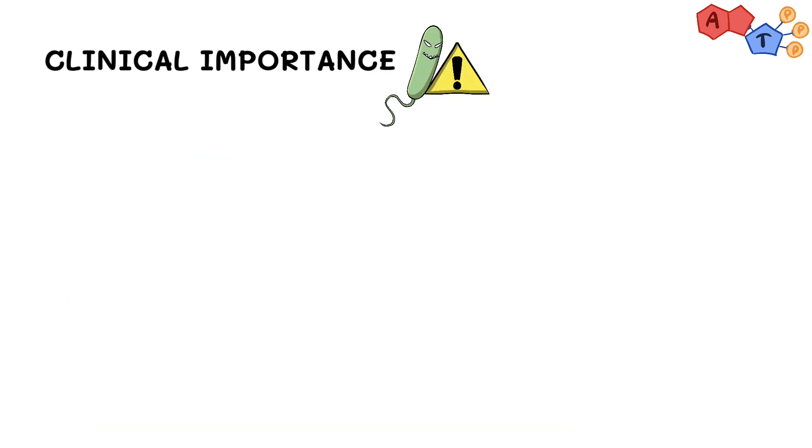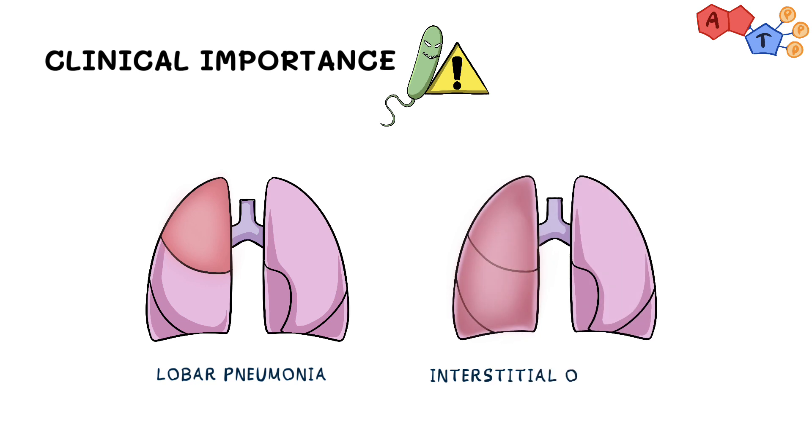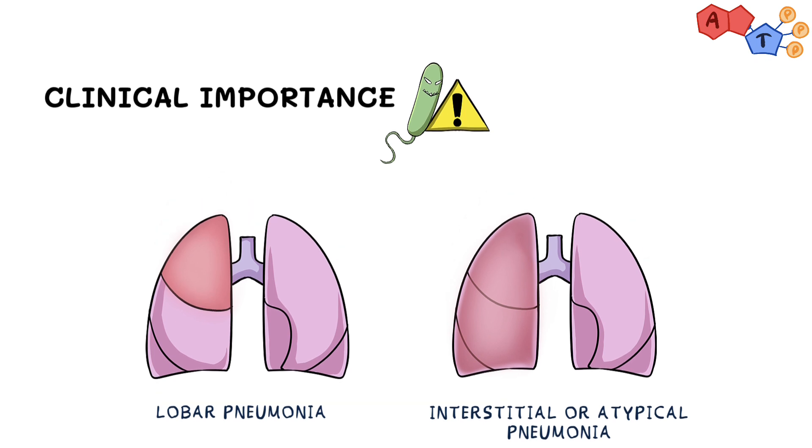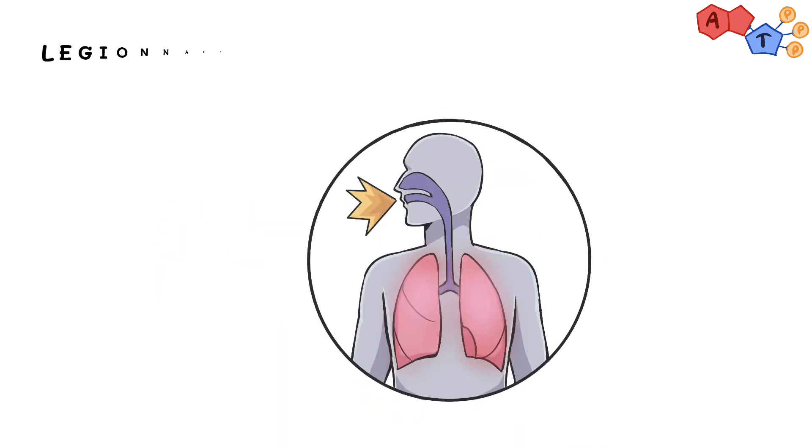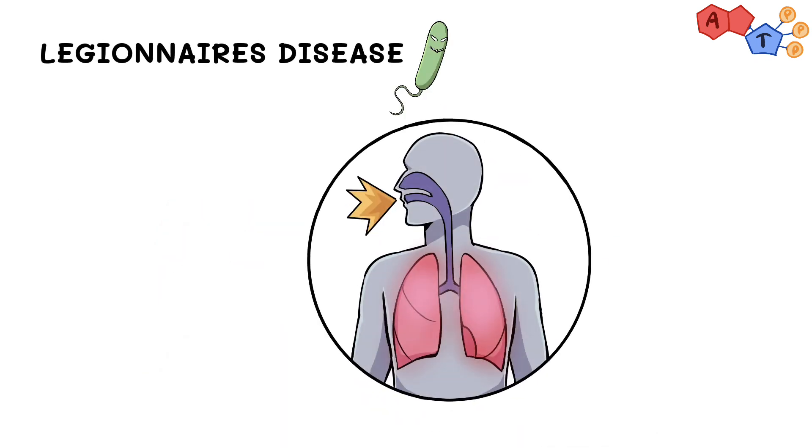Legionella can cause lobar as well as interstitial, also known as atypical pneumonia. In addition to that, it can cause two types of diseases. The first one is called Legionnaires disease. In this disease, patient will present to you with mild symptoms and the pneumonia can progress to a more severe stage if not appropriately managed.